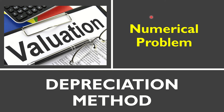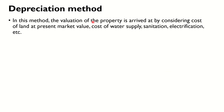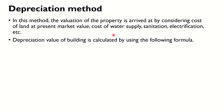We shall now see the depreciation method of valuation along with a numerical example. In this method, the valuation of properties is arrived at by considering the cost of the land at present market value, cost of water supply, sanitation, electrification, etc., according to present market value. The depreciation value of the building is calculated using the formula: D = P × (1 - r/100)^n.